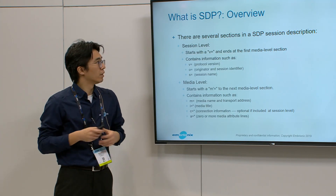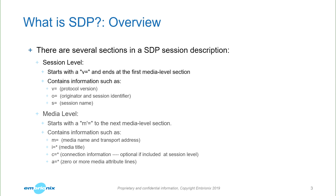There are several sections in an SDP session description. There's the session level, which usually starts with V equals something, and then it ends at the next media level. You can have multiple media levels in a single session description protocol. What does the session level contain? Usually it's the protocol version, the originator of the session, who's sending that SDP file, and if you want to have it, a session name.